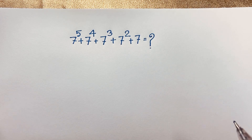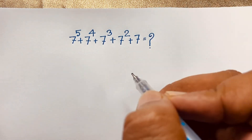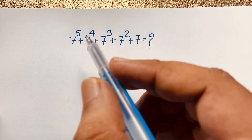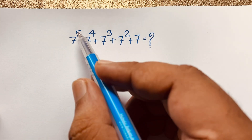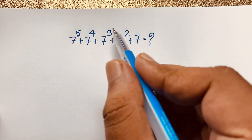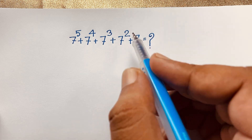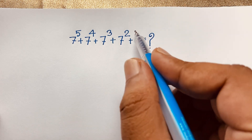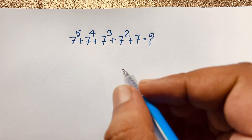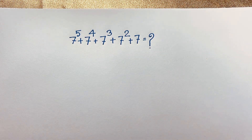Hello everyone. How to solve this interesting math olympia question without a calculator. Our question: 7 to the power 5 plus 7 to the power 4 plus 7 to the power 3 plus 7 to the power 2 plus 7 is equal to what. How to solve this math problem without a calculator.